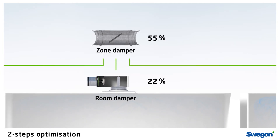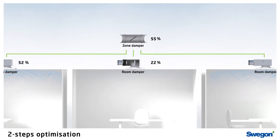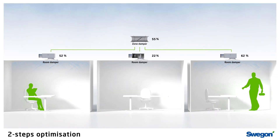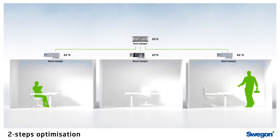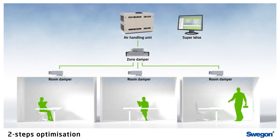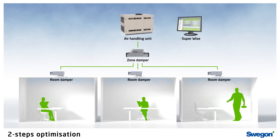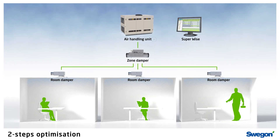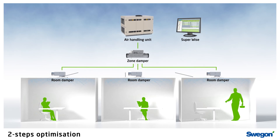As the zone damper constantly adjusts to the room products, the airflow in the other rooms of the zone are not affected. Maintaining an equalized airflow and controlling air volume according to requirements makes the system both energy efficient and eco-friendly.